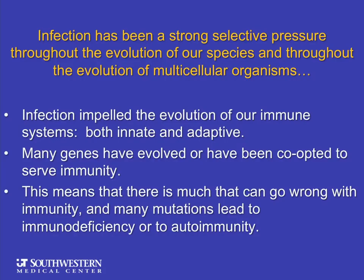This selective pressure has been so great that, looking back at the whole history of multicellular organisms, infection impelled the development of an elaborate immune system — really two immune systems: the innate and the adaptive. Many genes have been co-opted from other functions to serve immunity, or evolved de novo to do so. This means there is a lot that can go wrong with immunity — many mutations can lead to immunodeficiency or autoimmunity.